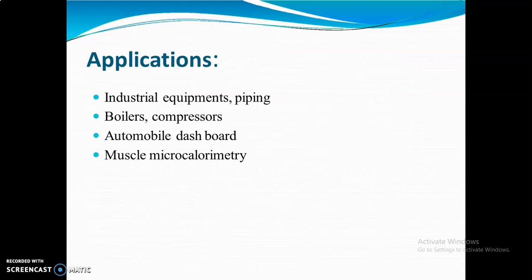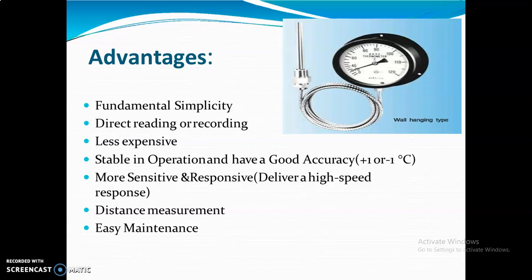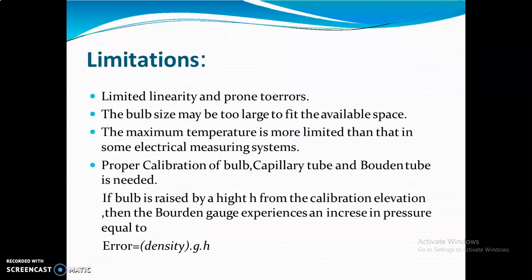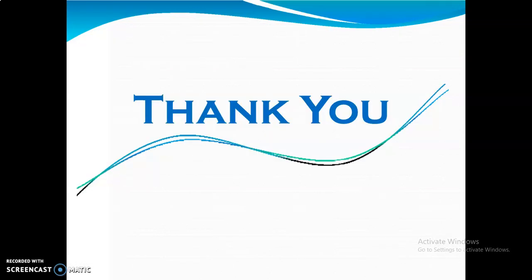Applications include use in boilers, compressors, automobile dashboards, and industrial equipment piping. Advantages include: it is very simple, offers direct reading or recording, is less expensive, allows distance measurement, and is more sensitive with easy maintenance. Limitations include limited linearity, bulb sizes may be too large to fit available space, proper calibration is required, and if the bulb rises in height from the calibration elevation, the Bourdon gauge experiences increasing pressure equal to the error rho·g·h.